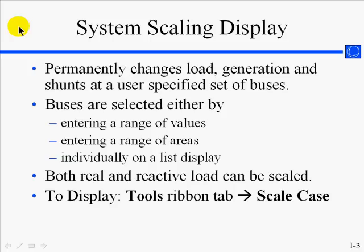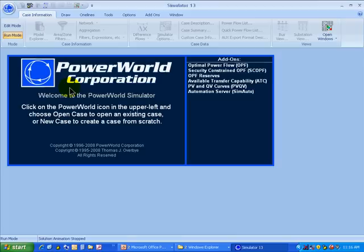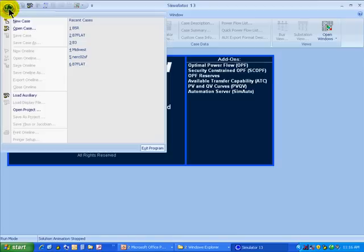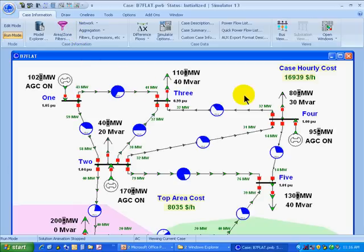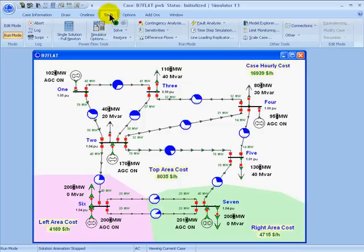Power World Simulator has a tool for scaling load and generation. It allows the user to select a group of buses to scale the load or generation at, either individually or by selecting their areas. Both real and reactive power load can be scaled with the tool. The tool is located on the tools ribbon tab. Let's open the sample case B7 flat, and from the tools ribbon tab, choose Scale Case.